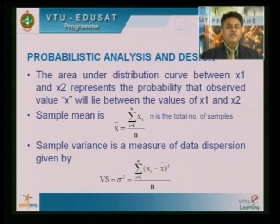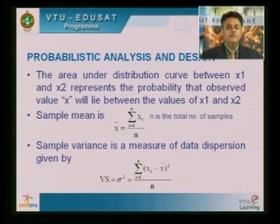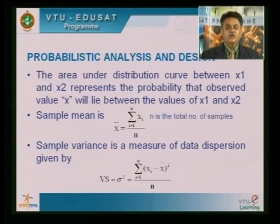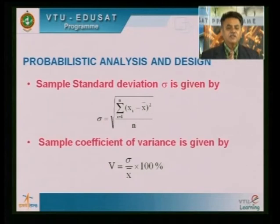Between two ranges x1 and x2, the area under the curve gives the probability of values occurring between x1 and x2. I now define statistical terms you studied in mathematics. The sample mean is the sum of values from i=1 to n, divided by n where n is the total number of samples — this is simply the average. The sample variance is sigma squared, where sigma is the standard deviation: the square root of the summation of (xi minus x-bar) squared, divided by n.